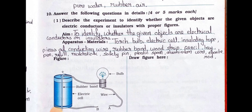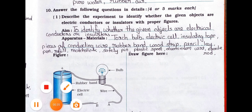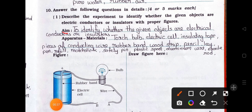Number one: describe the experiment to identify whether the given objects are electric conductors or insulators, with proper figures. The aim of the experiment is to identify whether the given objects are electrical conductors or insulators. Apparatus and materials needed: torch bulb, electric cell, insulating tape, pieces of conducting wire, rubber band, wood strip.